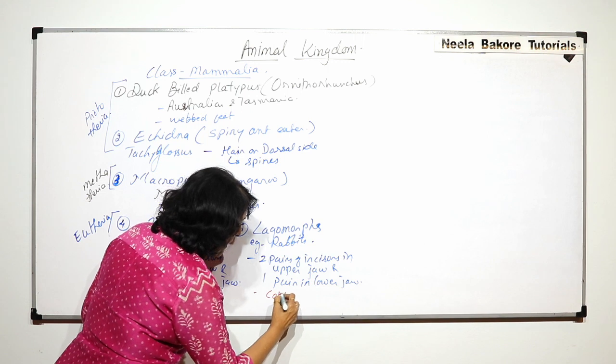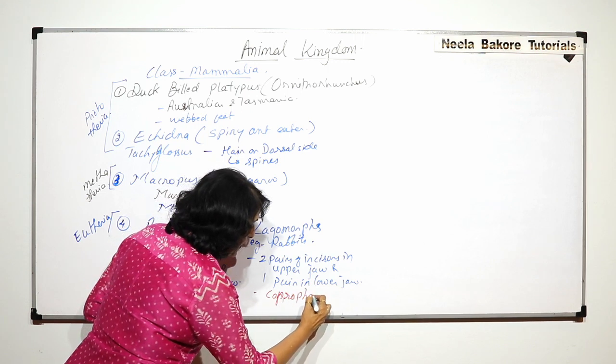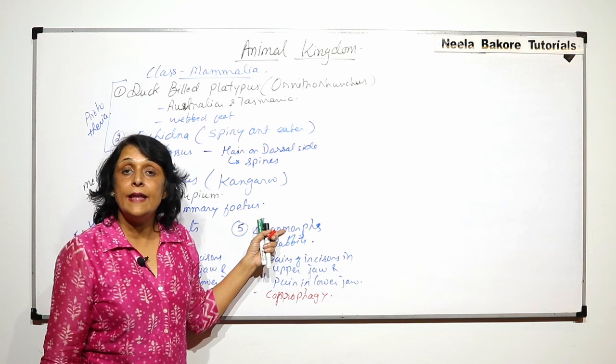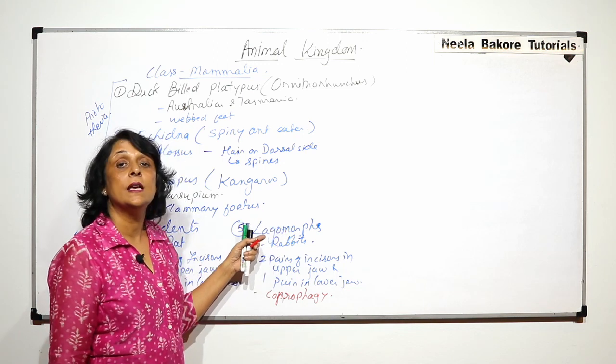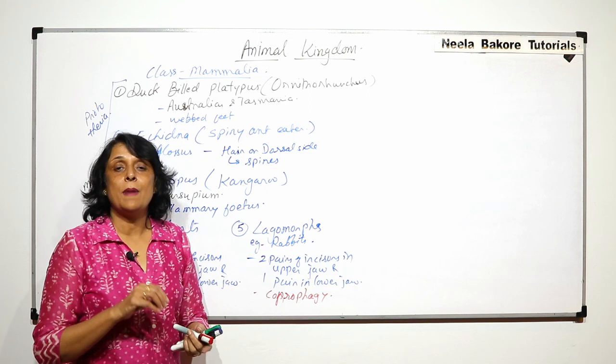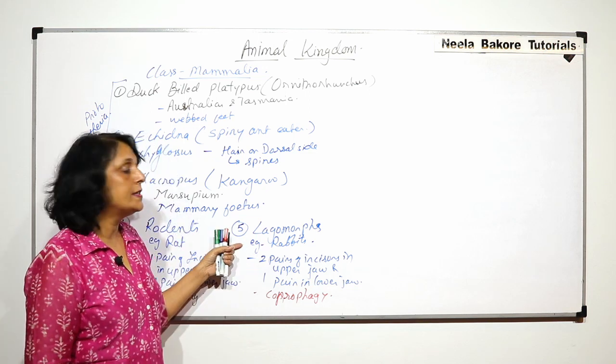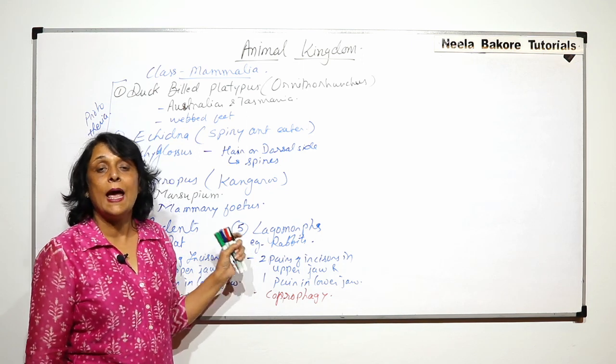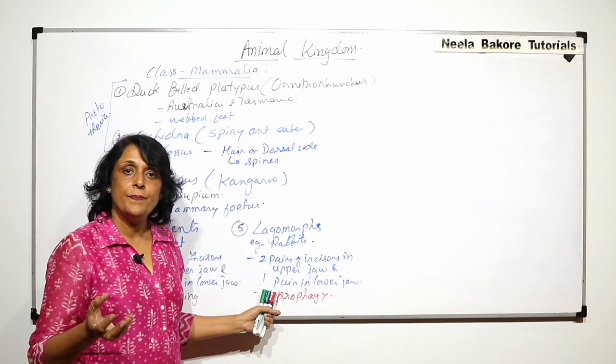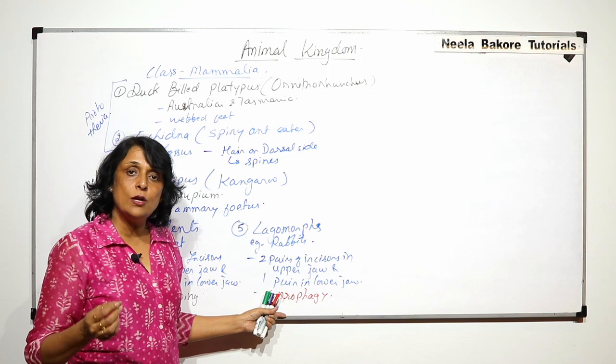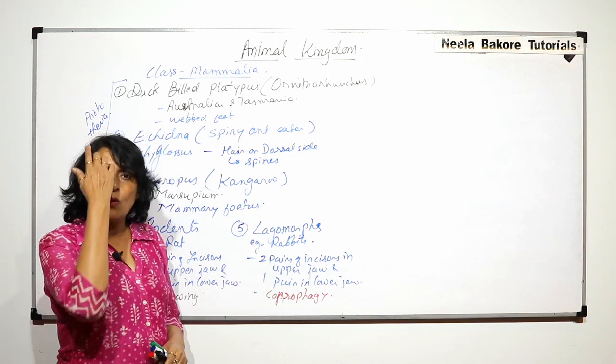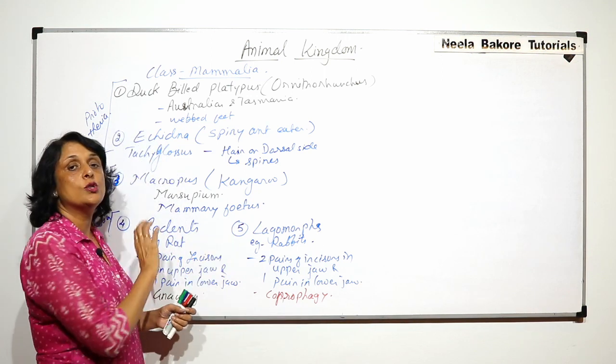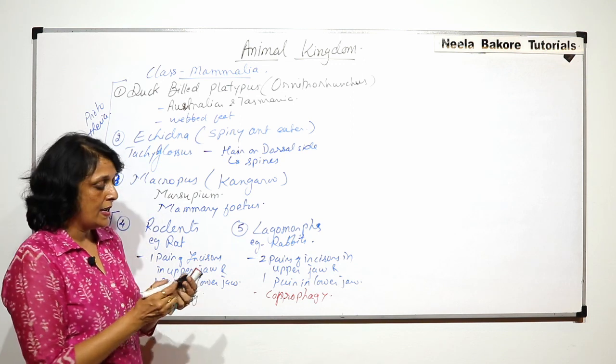One thing which is special about these lagomorphs like rabbit is they show coprophagy. That means they feed on their own fecal matter. The reason for that is that in them the cellulose digestion takes place in the cecum part. After cecum, there is only large intestine, so large intestine will absorb only water. That digested cellulose does not get absorbed, and that is why it gets excreted. That excreted digested cellulose is consumed by these animals, and that is why they show coprophagy. That is why we talk about these two categories together: rodents and lagomorphs.